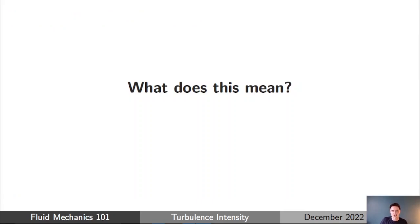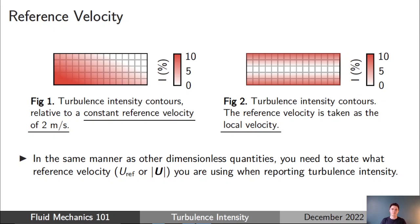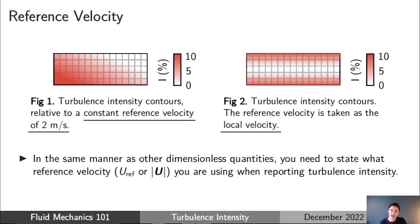What does this mean for you as a user? First, it's essential when presenting contours of turbulence intensity to note — either in the caption or in the text — what definition of turbulence intensity has been used. The contours will be very different depending on whether you've used the local velocity or a fixed reference velocity. For a simple pipe flow, the local velocity tends to zero near the wall, so turbulence intensity based on local velocity could be very high there, whereas a fixed-reference definition may not show that.